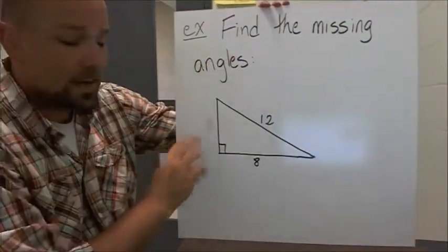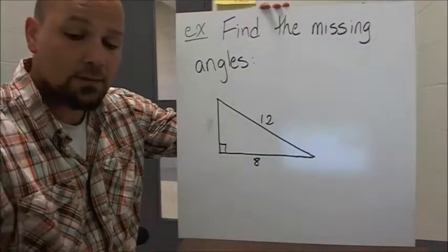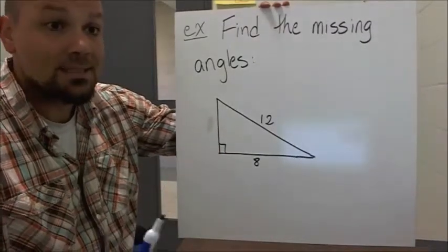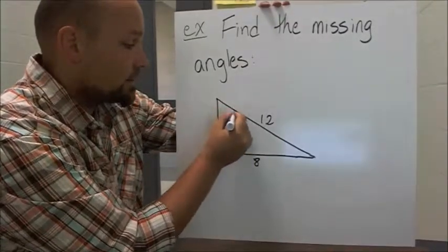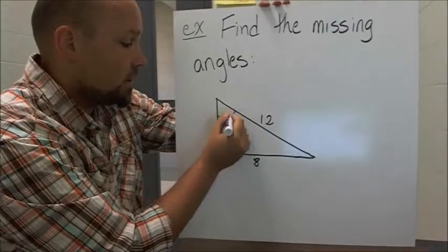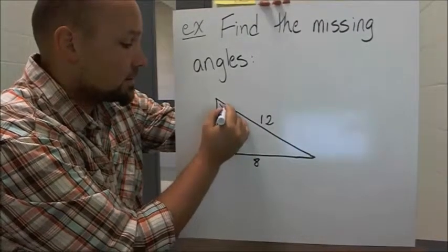So I have find the missing angles, so I have to find both of the angles. So my first job is to decide which angle do I want to find first. So let's just say I want to find this angle first. So let's call it angle X.